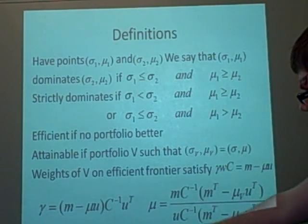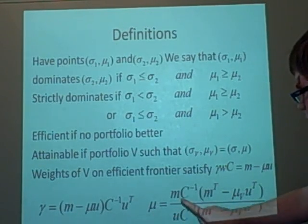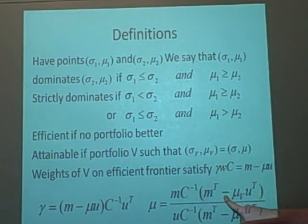Right, first I'm going to define this one, which is the mu. So this is m times the inverse of covariance times m transpose, transposed minus mu v times the unit vector transpose. And it's the same underneath, but we're just swapping m for u.